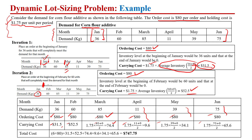The order cost for all 6 months is 6 × $80, plus the carrying costs for each month — January through June — summed together. The total cost we have to bear is $747.75 if we solve this problem using the lot-for-lot heuristic. In the next lecture, we will see if we can solve this problem with another heuristic. See you in the next lecture.